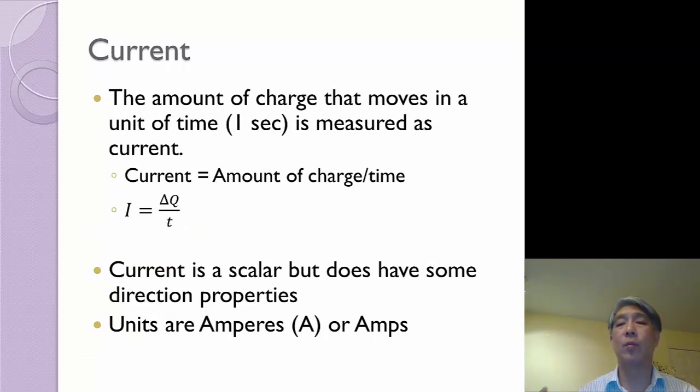I've talked about current, and current is measured in a unit that we call amperes, or use the letter A. Frequently I'll just shorten the word amperes to amps. And current is the amount of charge that passes a point in a certain unit of time, usually just one second. So one ampere corresponds to one coulomb of charge in one second.